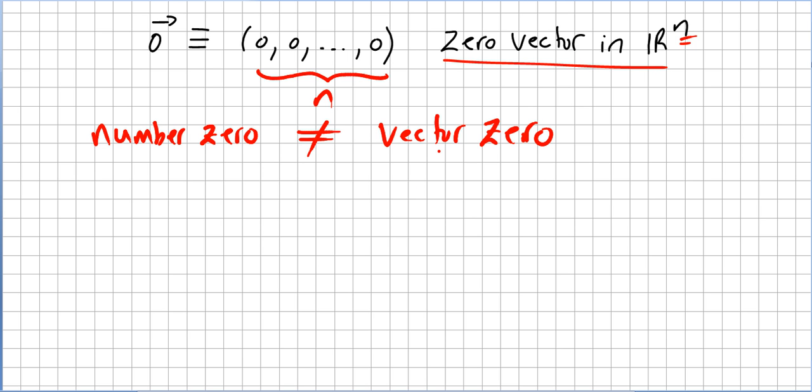So please be very careful. There is a difference between number zero and vector zero. Sometimes we are asked one, sometimes we are asked for the other.